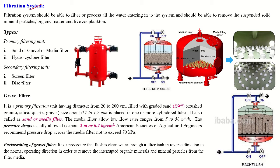In this session, we will discuss about the filtration system. The filtration system is the most important unit in a drip irrigation system. When you are using surface water from a river, canal, or any other source, there are many unwanted materials — sand particles and debris in your water.